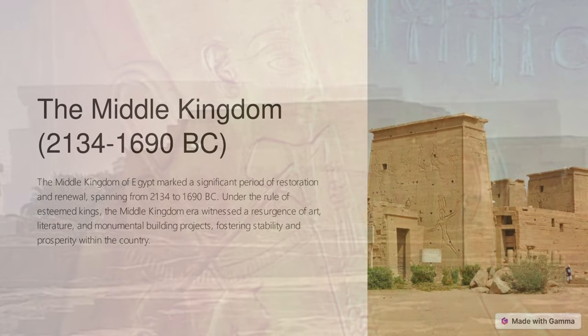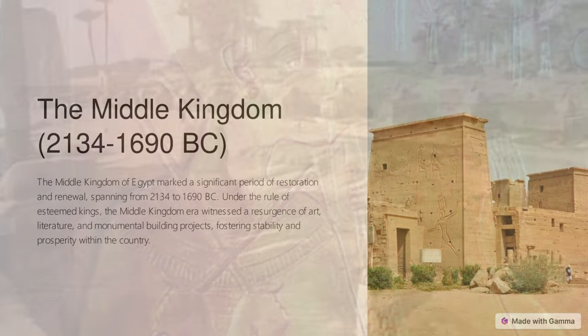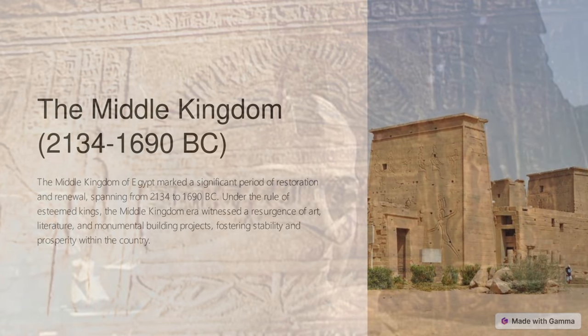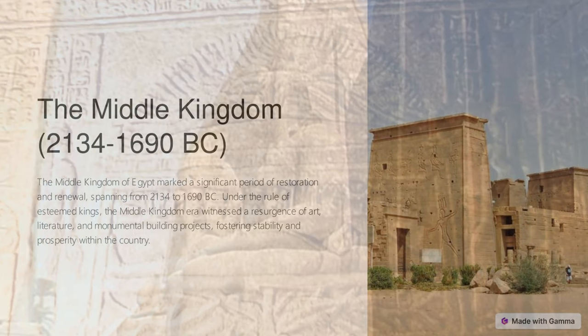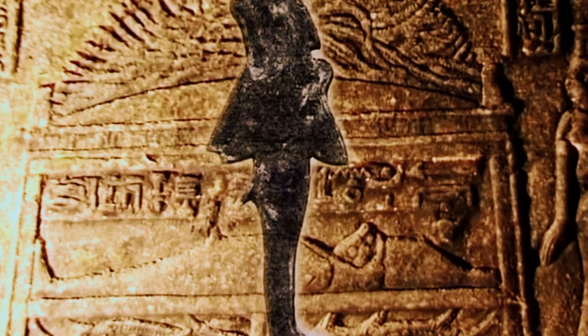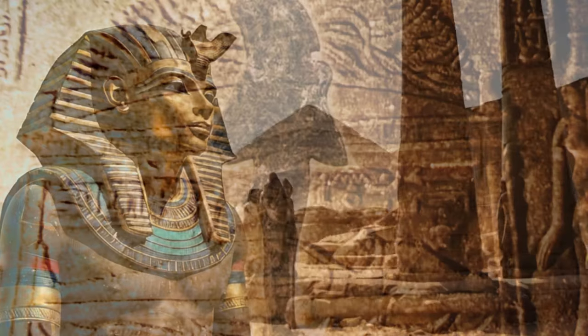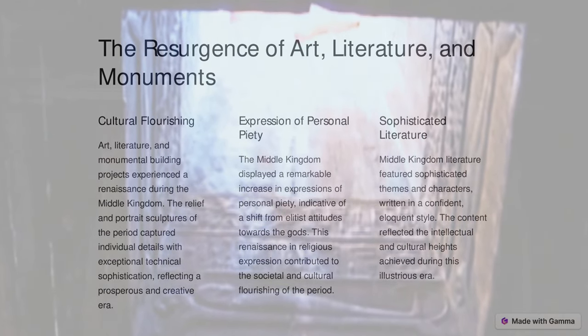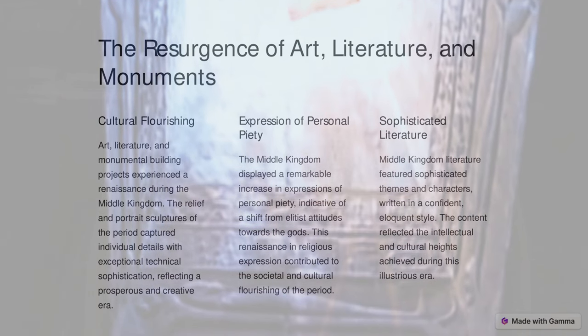The Middle Kingdom lasted from 2134 to 1690 BC. The kings of the Middle Kingdom restored the country's stability and prosperity, thereby stimulating a resurgence of art, literature, and monumental building projects. Mentuhotep II and his 11th dynasty successors ruled from Thebes, but the vizier Amenemhat I, upon assuming the kingship at the beginning of the 12th dynasty around 1985 BC, shifted the kingdom's capital to the city of Itjtawy, located in today's Fayyum. From Itjtawy, the kings of the 12th dynasty undertook a far-sighted land reclamation and irrigation scheme to increase agricultural output in the region. Moreover, the military reconquered territory in Nubia that was rich in quarries and gold mines, while laborers built a defensive structure in the eastern delta called the Walls of the Ruler, to defend against foreign attack.